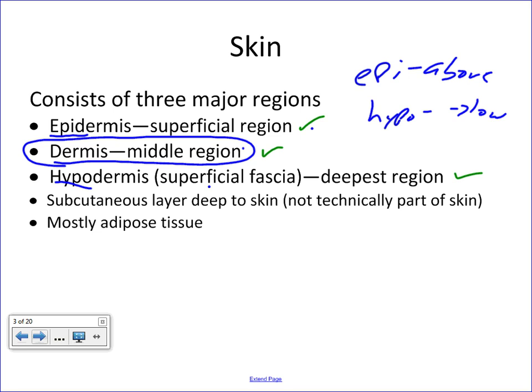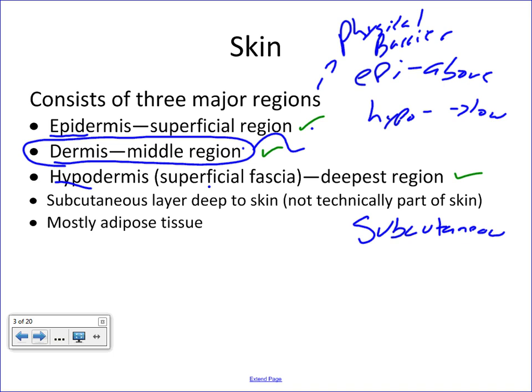The epidermis is essentially what creates the physical barrier. The dermis is made of a lot of loose connective tissue where glands, hairs, blood vessels, and nerves form networks. The hypodermis is what we call subcutaneous fat, or sub-Q — technically not really a layer of skin, but more or less in between the skin and the muscles within the body.